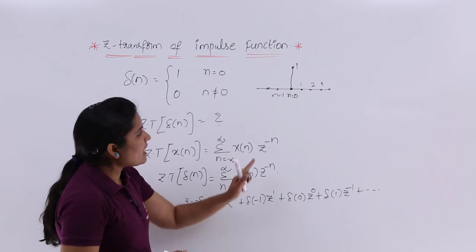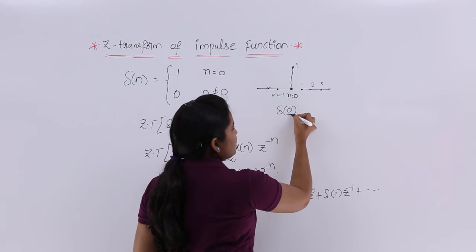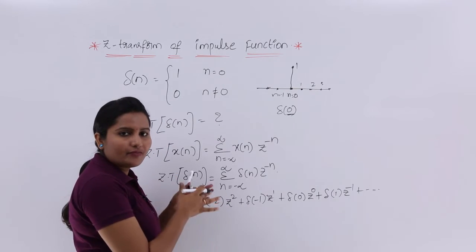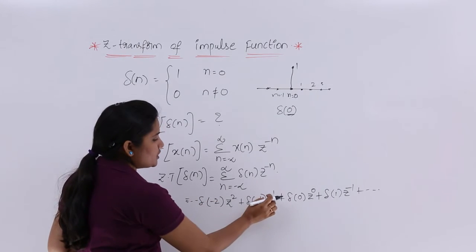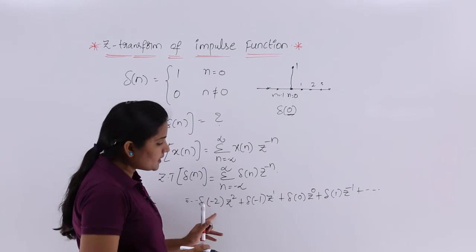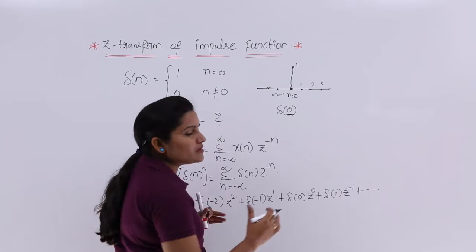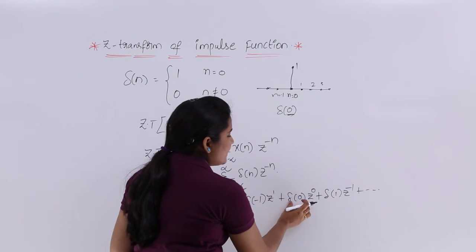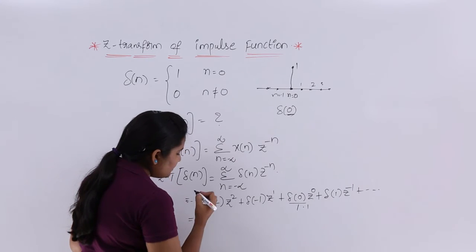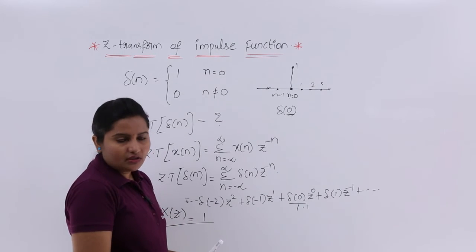We observe that δ(n) has a non-zero value only at n = 0, meaning only δ(0) equals 1; all other values δ(1), δ(2), δ(3), δ(-1), δ(-2), δ(-3) are 0. Substituting these zeros, every term becomes 0 except δ(0)·z⁰, which equals 1·1 = 1. Therefore the Z transform of the impulse function equals 1.